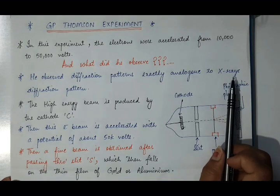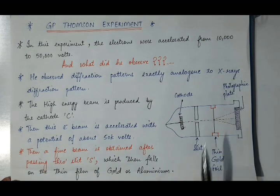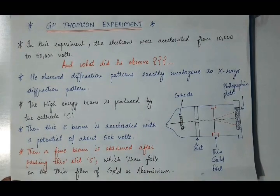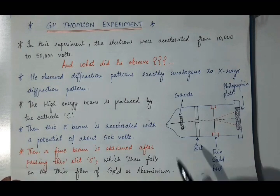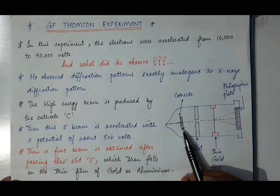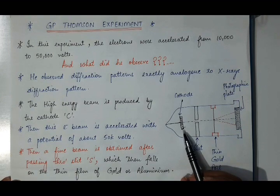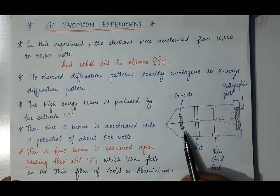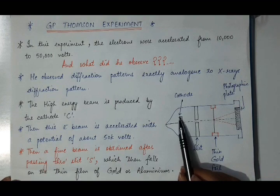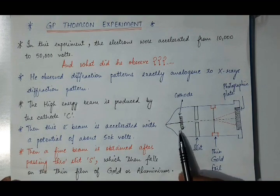That is, a de Broglie wave is associated with the motion of electrons. In this experiment, he used a cathode C with the help of which a high energy electron beam is produced.